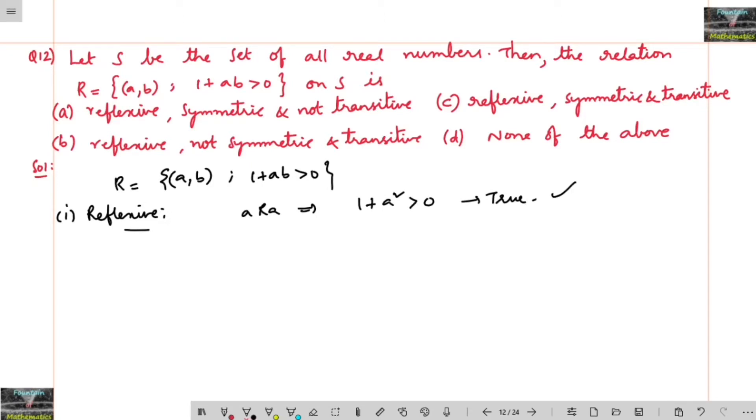Right, for any real number, because it is defined on any real numbers. Set of all real numbers given. It is true, 1 plus a square is always greater than 0, so it is reflexive.